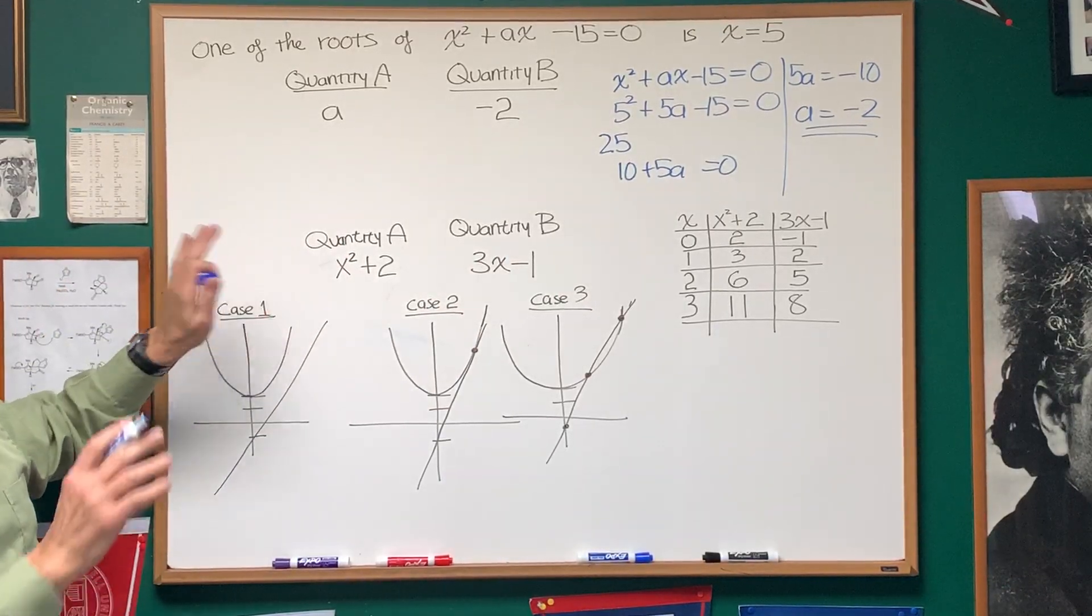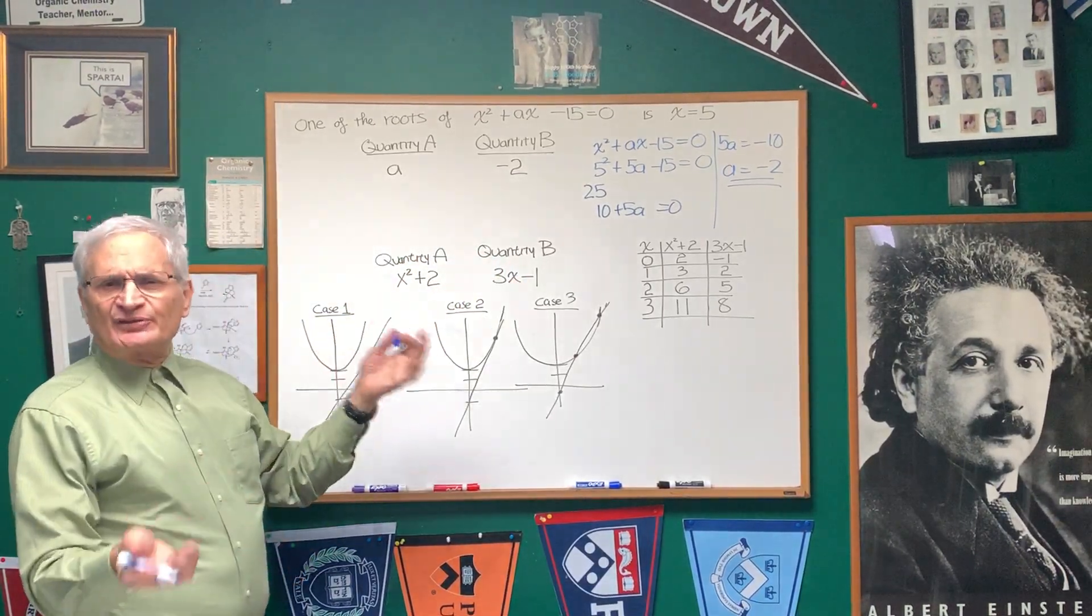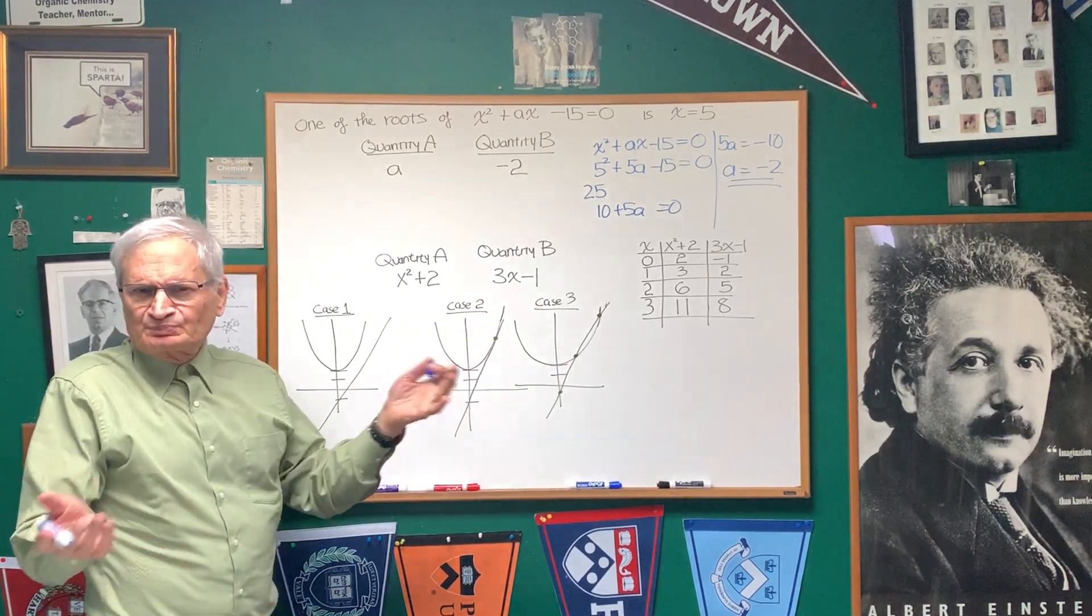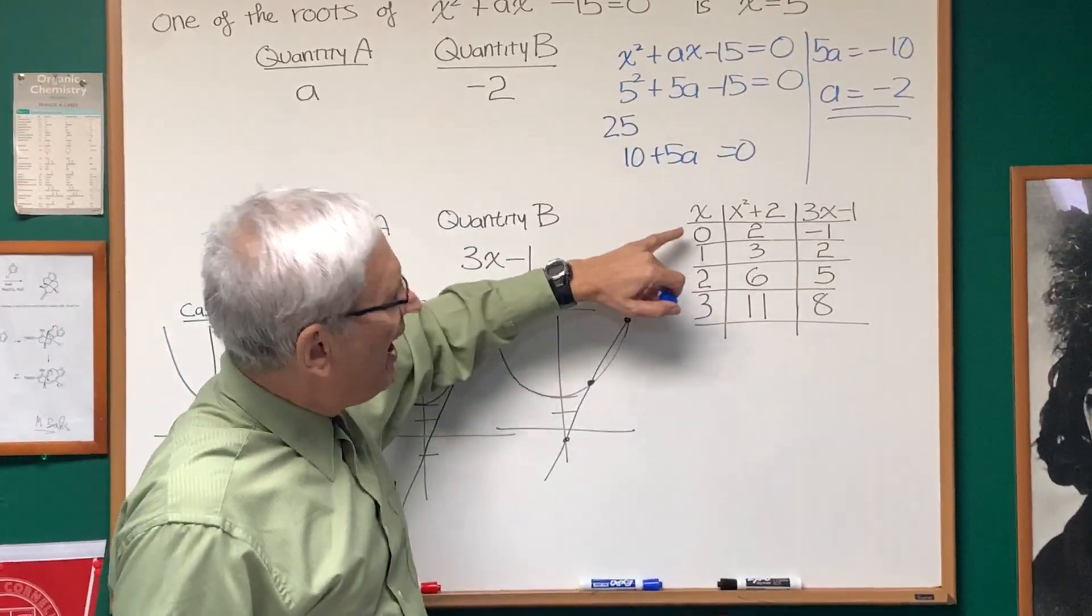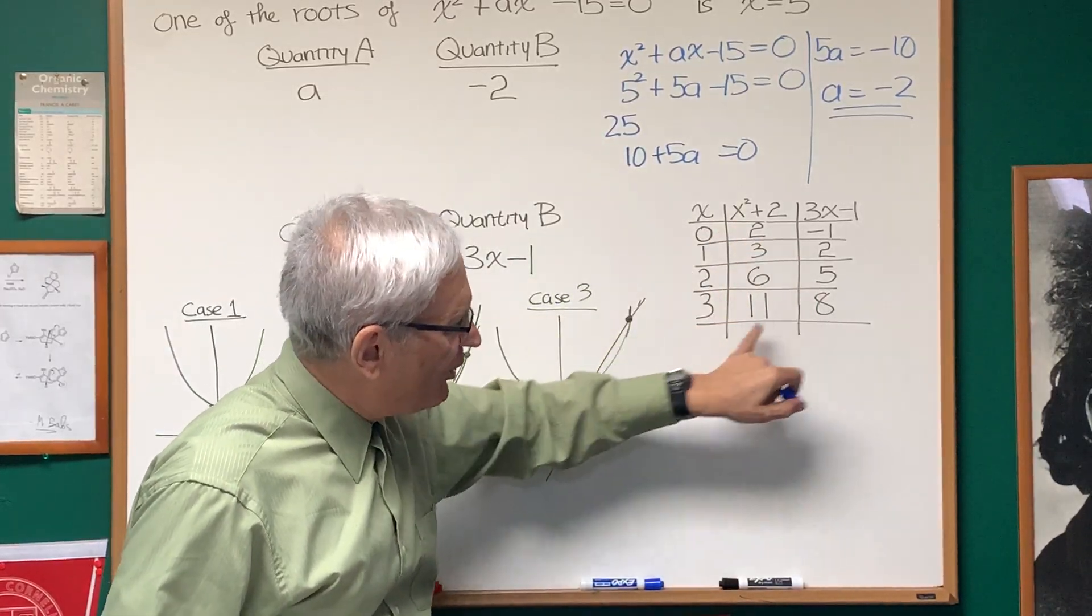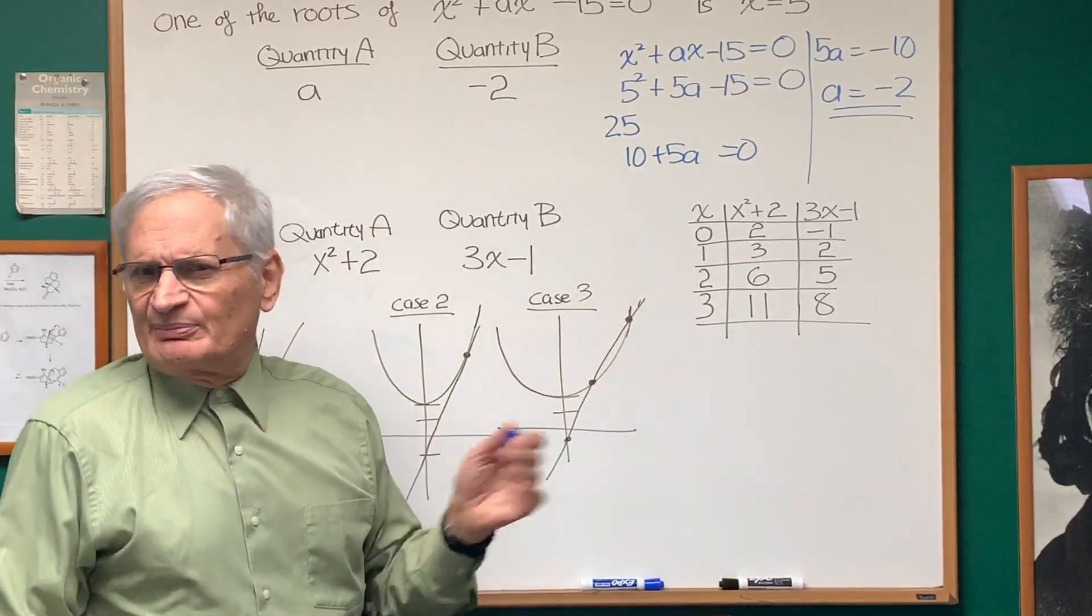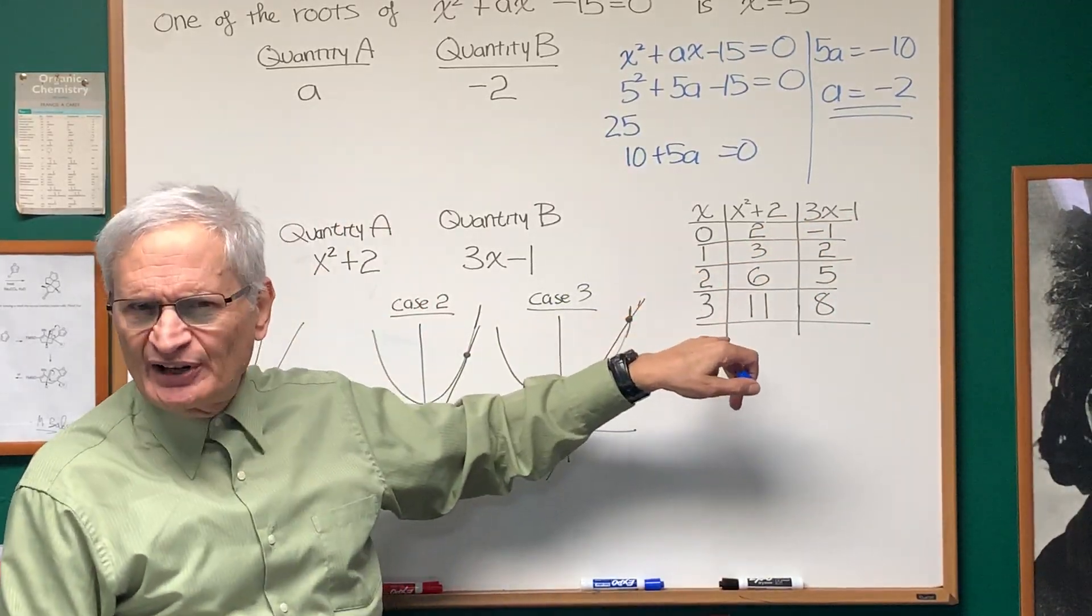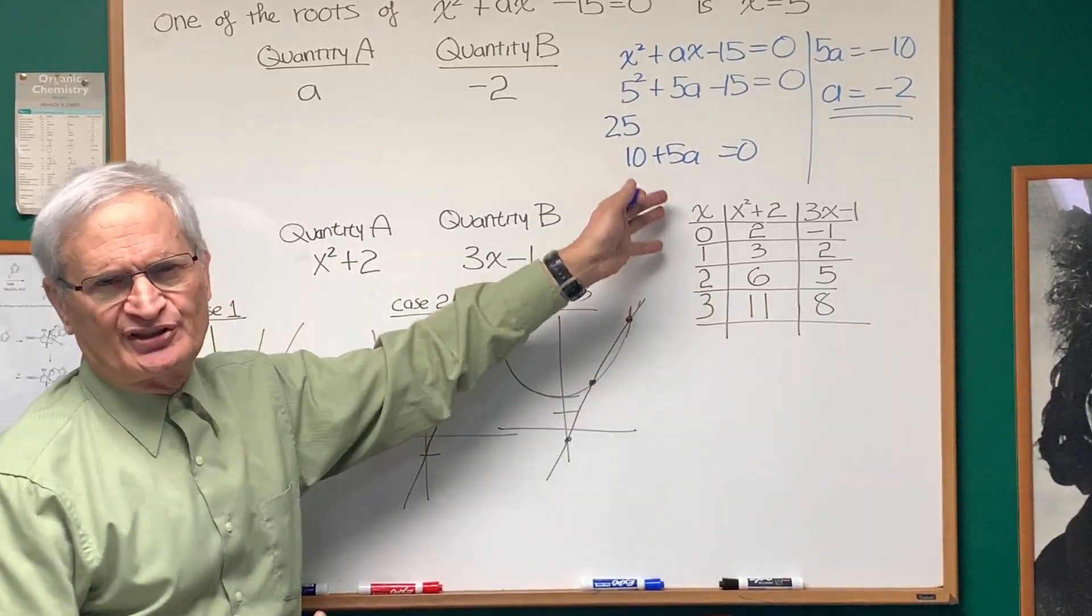Now let's go to the second problem of the similar structure. Which is larger, quantity A or quantity B? We have two expressions now: x squared plus 2 and 3x minus 1. Well, one way to do this is to make a little table. x squared plus 2, 3x minus 1, and fill in some x values. We can see that the x squared plus 2 is always larger when x equals 2, they're pretty close. But we don't know whether the value of 3x minus 1 may be larger at some point that's in between those integer values.